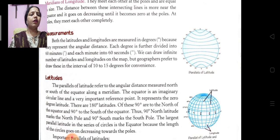So now here you can see the picture of the parallels of latitudes. The parallel of latitudes refer to the angular distance measured north or south of the equator along a meridian. The equator is an imaginary circular line and a very important reference point. It represents 0 degree latitude. There are 180 latitudes, of which 90 degrees are to the north of the equator and 90 degrees to the south of equator.